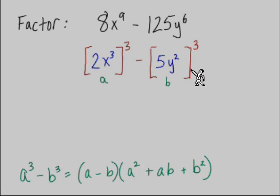In our first box is our A, and in the second box is B. So first set of parentheses, A minus B, it's going to be 2x to the third minus 5y squared.